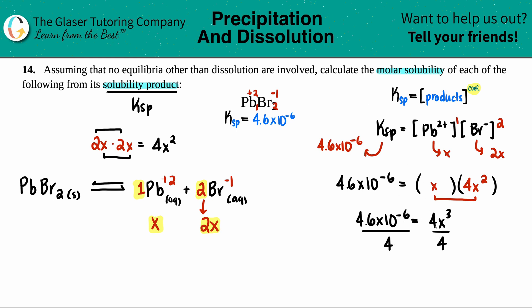And that will cancel this out. So 4.6 times 10 to the negative six divided by four. I get 1.15 times 10 to the negative six. And that equals X cubed.